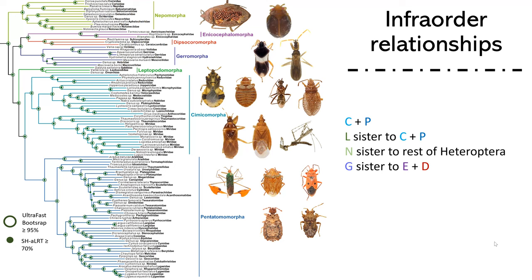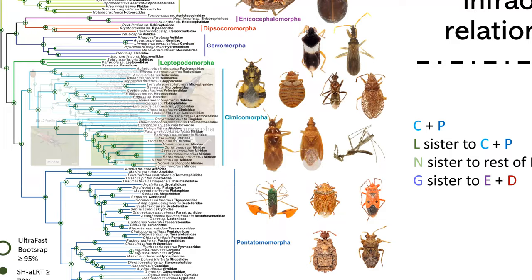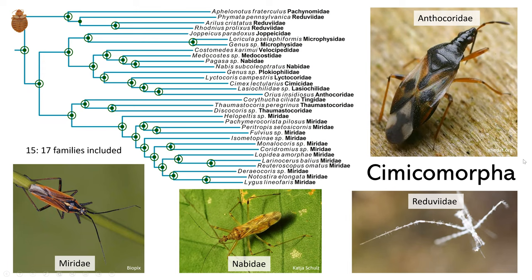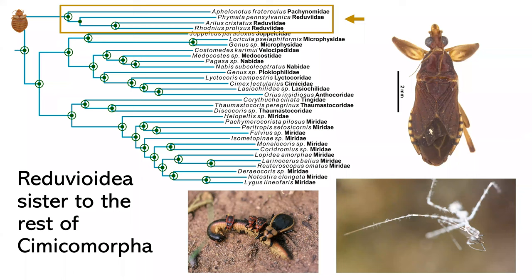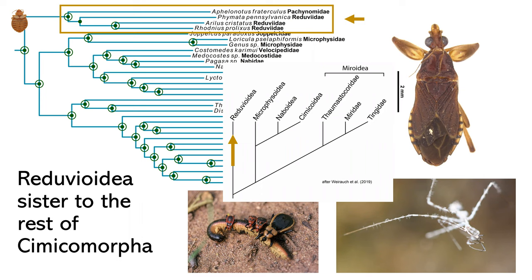Looking at Cimicomorpha, we included 15 of the 17 families, which we're pretty excited about. We found that Reduvioidea is sister to the rest of Cimicomorpha, which agrees with Biardidae's analysis — we're pretty happy with that.